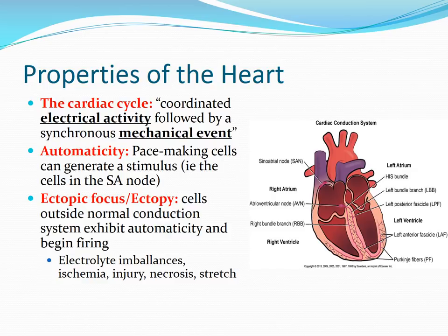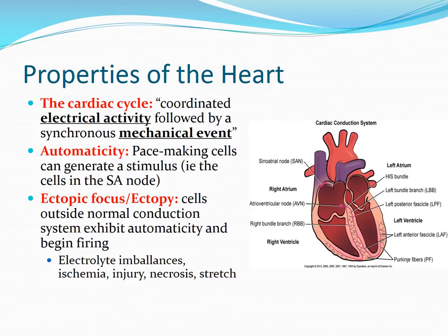Ectopy is an umbrella term that describes any abnormal firing of electricity. Why would we have this misbehaving group of cells outside of our normal sequence of events? This will essentially happen when your heart is stressed — things like electrolyte imbalances such as hypokalemia, ischemia which occurs during a myocardial infarction, injury to the heart, necrosis of the tissue, stretching of the tissue as may happen in heart failure, or even hypoxemia.